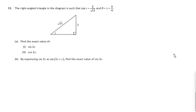Hi, Mr. Corsi here. Here's a good old trig question for us. We're given a right angle triangle, we know the hypotenuse is root 11 and the opposite side is 2, and we're asked to find the exact value of sine 2x where x is this angle here, and also cos 2x, and then in part b, expand sine 2x plus x and find the exact value of that.